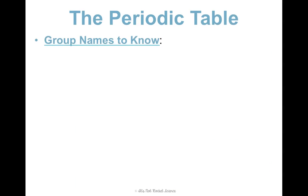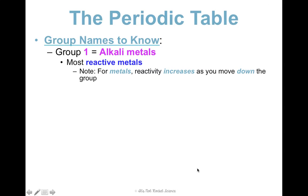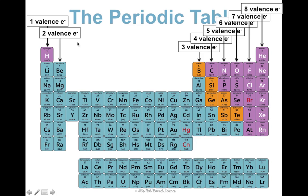Because they have similar properties, the groups also have special group names. Group one are the alkali metals — these are the most reactive metals; they really want to bind with other elements. For metals, reactivity increases as you move down the group. Note that when we label group one as alkali metals, we're talking about everything except hydrogen, because hydrogen is not a metal. It's in group one because it has one valence electron, but it's not technically an alkali metal like lithium through francium.